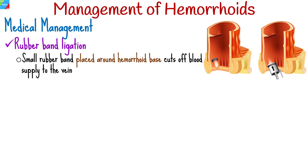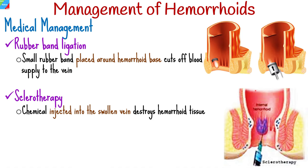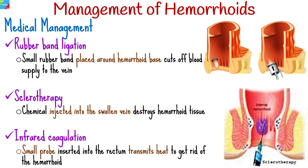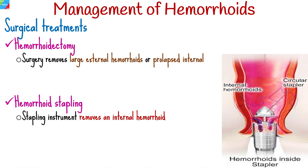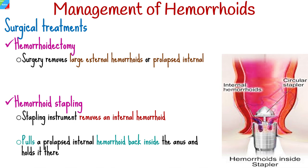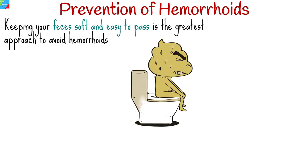If at-home treatments don't help, medical procedures may be needed. Rubber band ligation places a small rubber band around the base of a hemorrhoid to cut off its blood supply. Sclerotherapy involves injecting a chemical into the swollen vein to destroy hemorrhoid tissue. Infrared coagulation uses a small probe inserted into the rectum to transmit heat and eliminate the hemorrhoid. Surgical treatments include hemorrhoidectomy, which removes large external or prolapsed internal hemorrhoids, and hemorrhoid stapling, where a stapling instrument removes or repositions a prolapsed internal hemorrhoid back inside the anus.